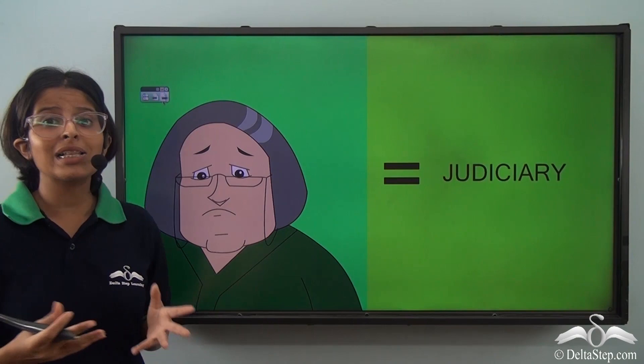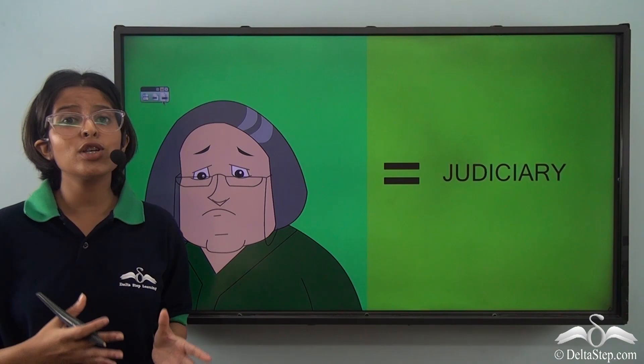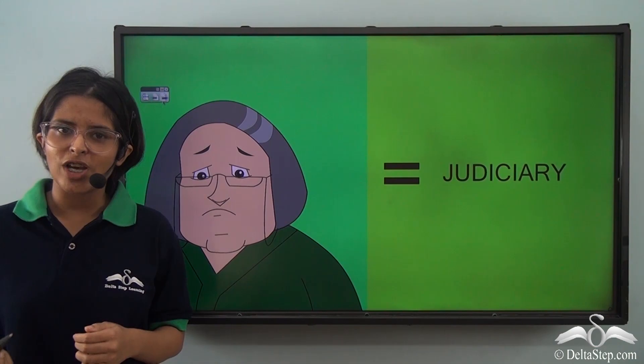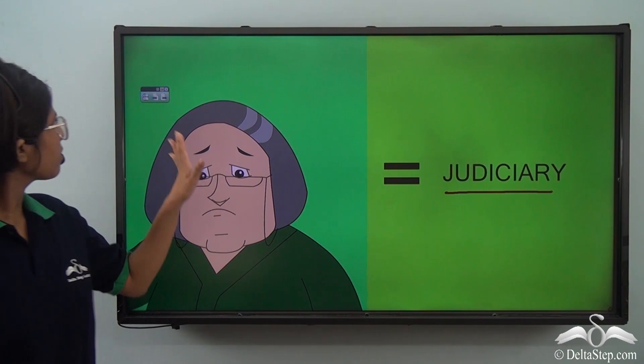The principal who interpreted the law and gave the punishment to Neha is equal to the judge or the judiciary of the government of India. So the judiciary interprets the law, resolves disputes, and administers justice. This body is known as the judiciary.